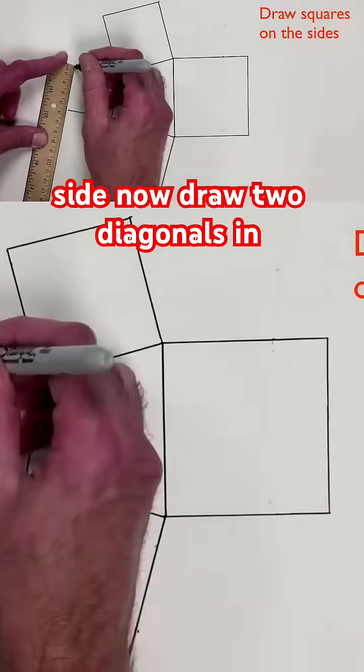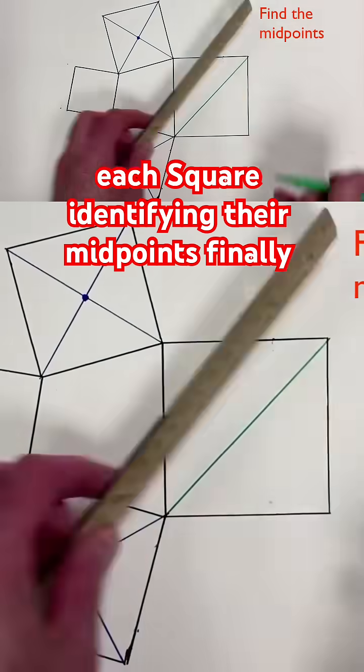Now draw two diagonals in each square, identifying their midpoints.